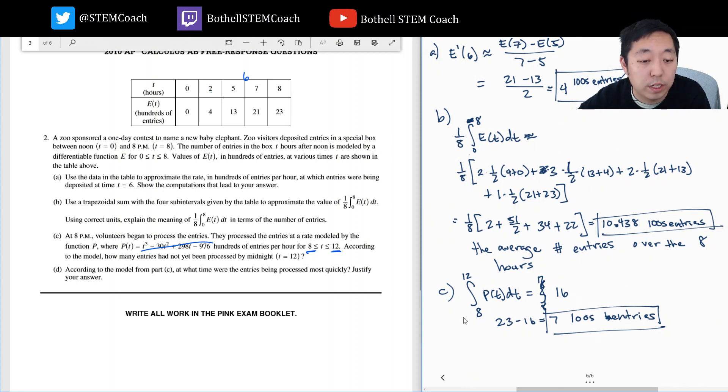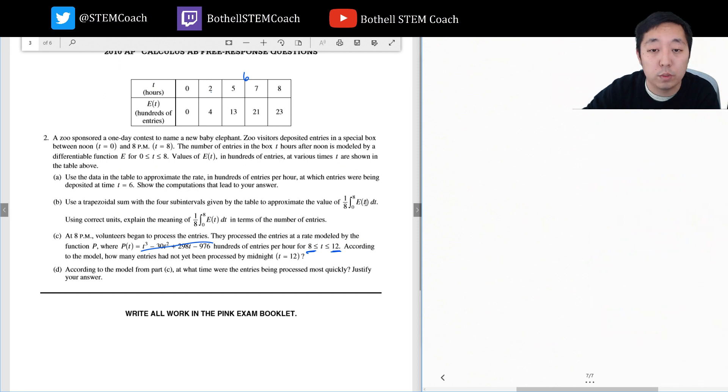According to the model from part C, at what time were the entries being processed most quickly? So when was the rate? This is a maximization question. When was the rate of P process max? Or when was, maybe P is already a rate. Yeah. So I want P of T is max. Well, I need to know when P prime of T is equal to zero. Find critical numbers. So I need to take the derivative. That's how I find max critical numbers. P prime of T is given by 3T squared minus 60T plus 298. That equals zero.